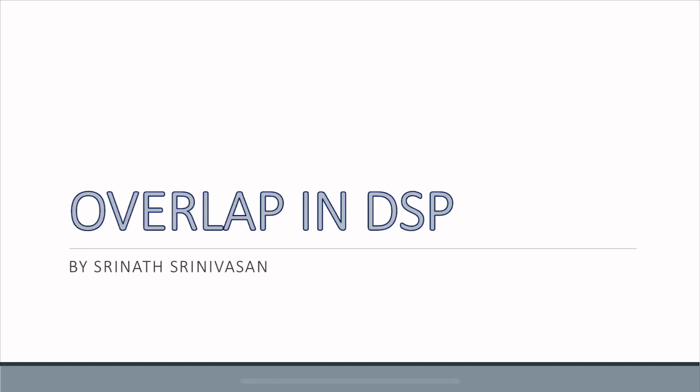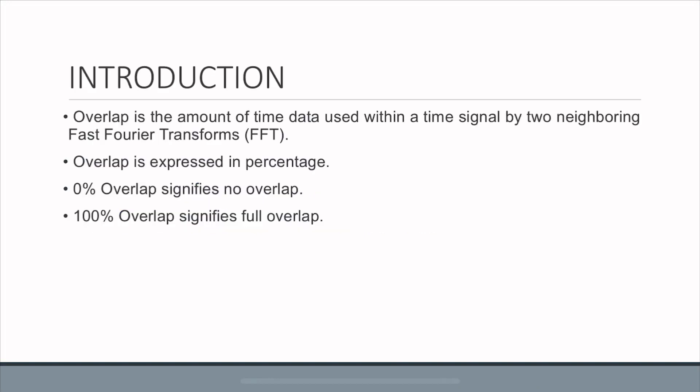Hello everybody, today we'll talk about overlapping in digital signal processing. Overlap is the amount of time data used within a time signal by two neighboring fast Fourier transforms or FFT.